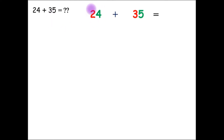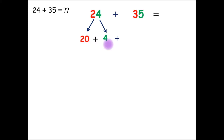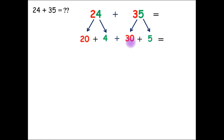In the number 24, we have 2 tens and 4 ones. So, 20 plus 4. And in the number 35, we have 3 tens and 5 ones. So, 30 plus 5.